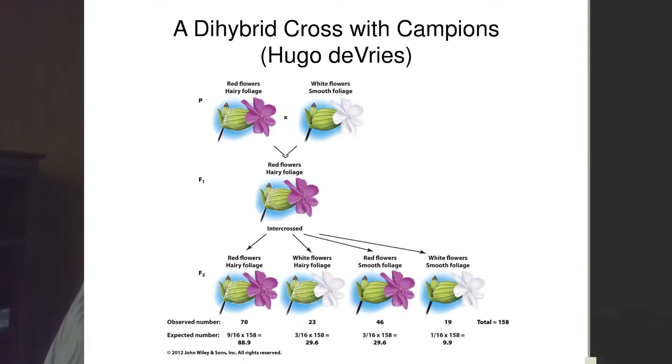When we intercross the F1 to get the second filial generation, we get 70 red hairy, 23 white hairy, 46 red smooth, and 19 white smooth. If we convert these to observed ratios: 19 divided by 19 is 1, 46 divided by 19 is a little over 2, 23 divided by 19 is again a little over 1, and 70 divided by 19 is somewhere around 3.5. We have this very strange ratio of 3.5:1:2:1.